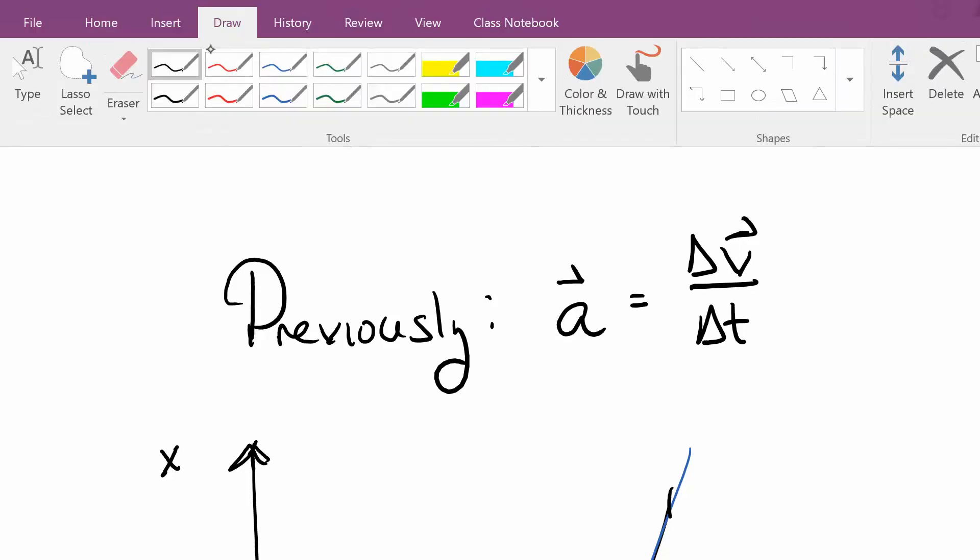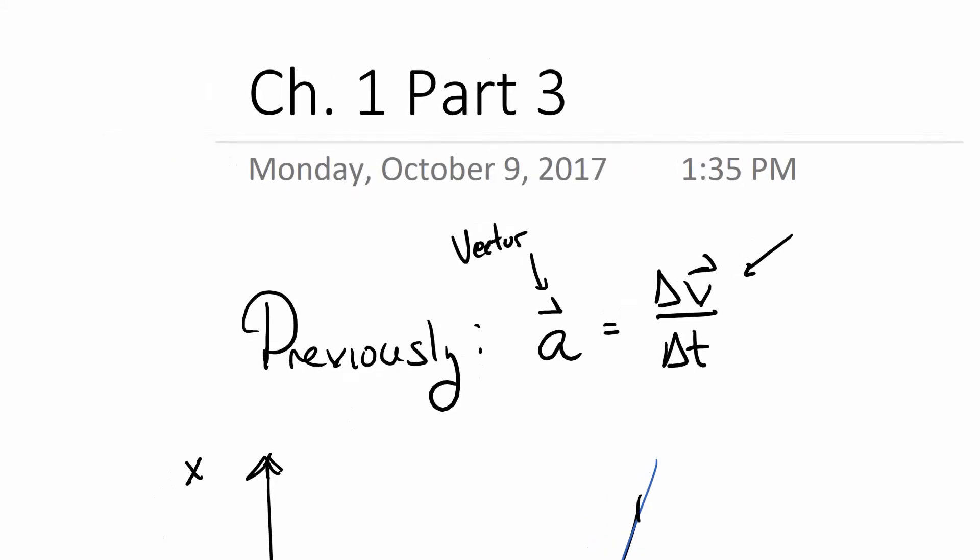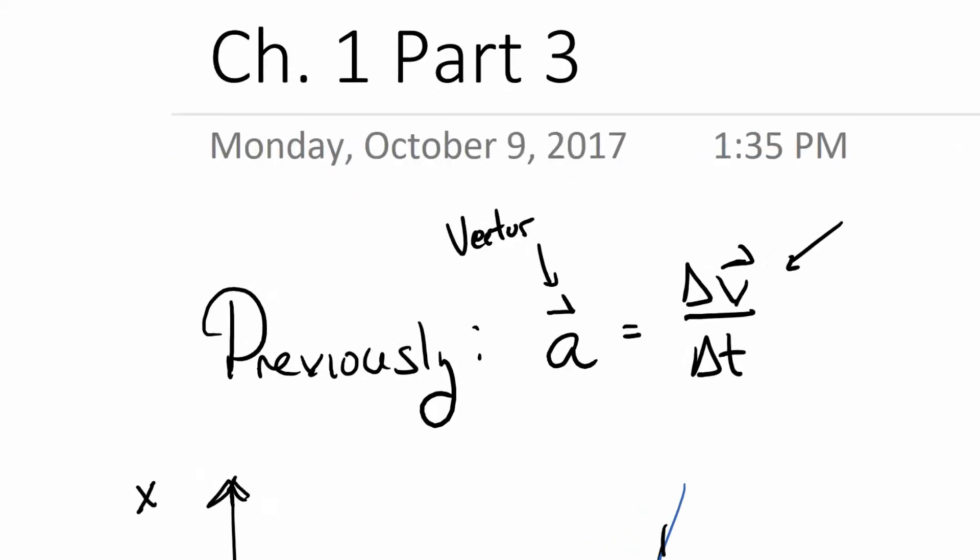So now it is important to note here that these little arrows, not just for health's sake, these are vector quantities. Acceleration is a vector because change in velocity is a vector. Vectors are equal to vectors, but not really important.